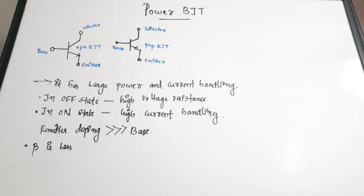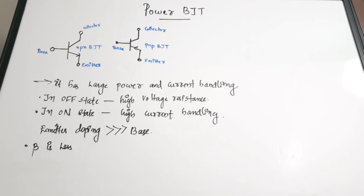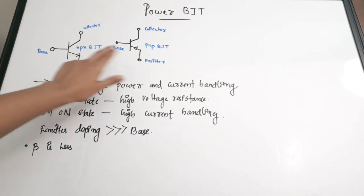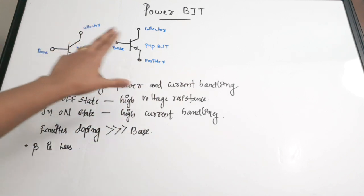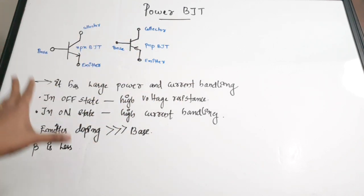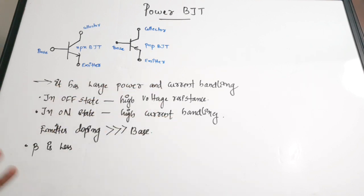In this video we are going to discuss about the power BJT. Just like power diodes, there is a device called power BJT which is a modified version of the normal BJT and it is used for handling of high power. The symbol of a power BJT is just like a normal signal BJT - it has three terminals: emitter, base, and collector. This is the symbol of an NPN BJT and this is the case of a PNP BJT. The symbol is exactly the same as a normal transistor.